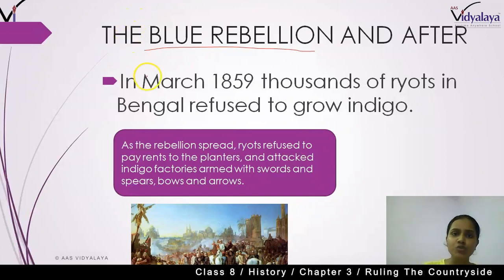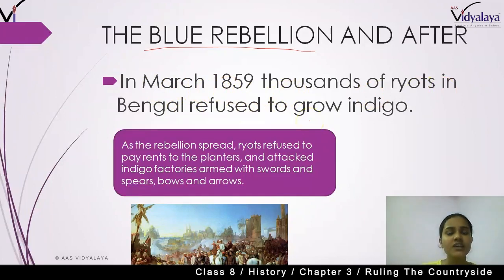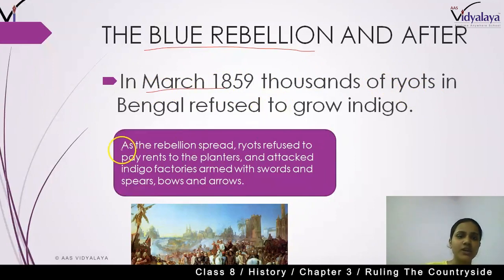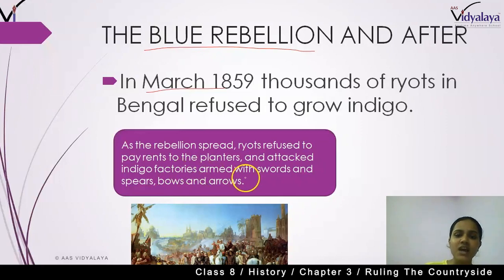In March 1859, thousands of ryots in Bengal refused to grow indigo. As the rebellion spread, ryots refused to pay rents to the planters and attacked indigo factories, armed with swords and spears, bows and arrows.